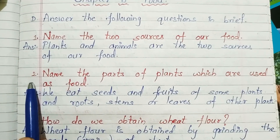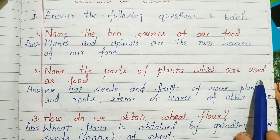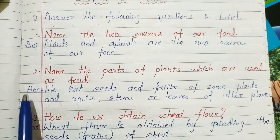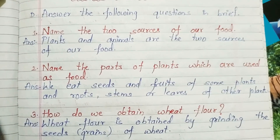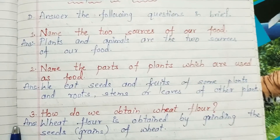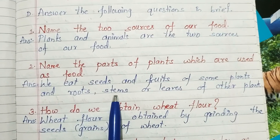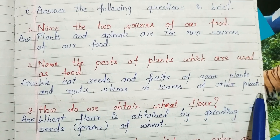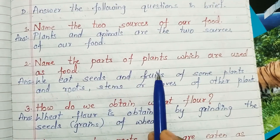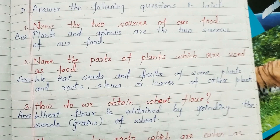Number 2, name the parts of plants which are used as food. Answer: we eat seeds and fruits of some plants and root, stems, or leaves of other plants. Or you can write: we eat seed, fruit, root, stems, or leaves of some plants.